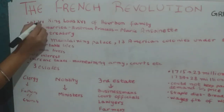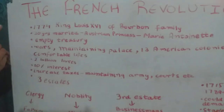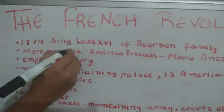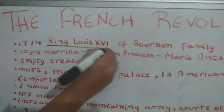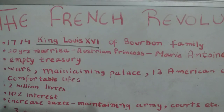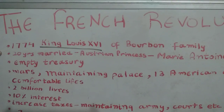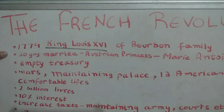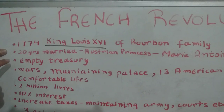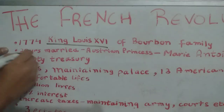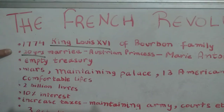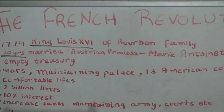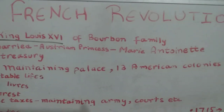In 1774, King Louis XVI, who belonged to the Bourbon family, was a king of France. At the age of 20, he married the Austrian princess Marie Antoinette.